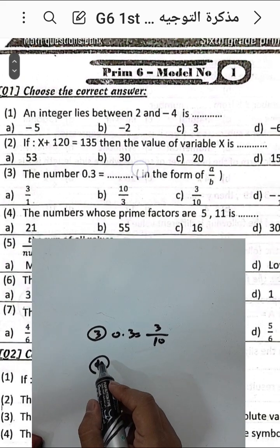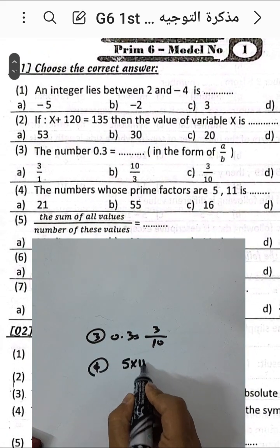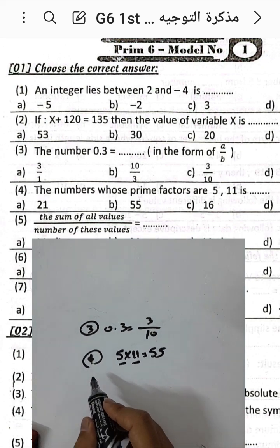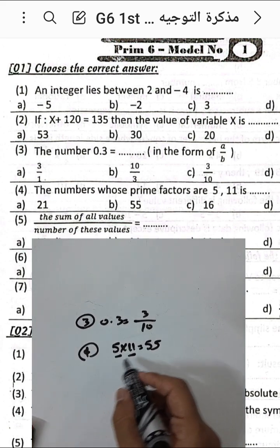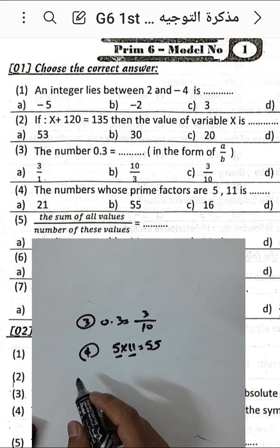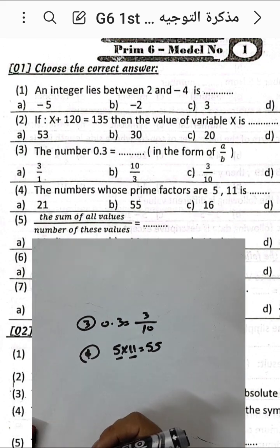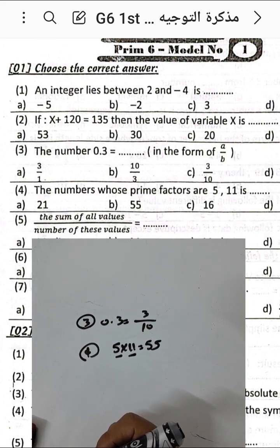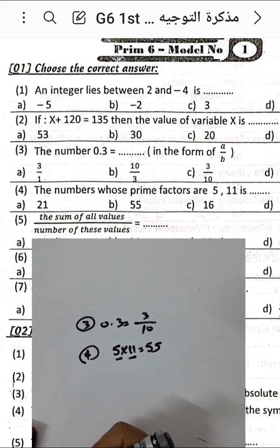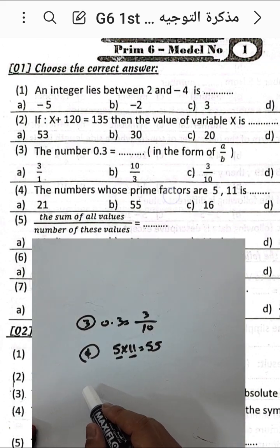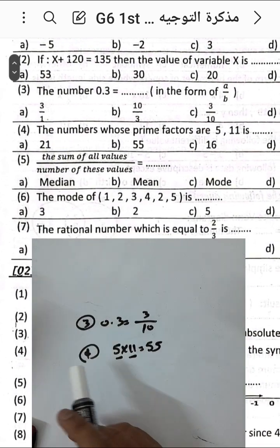Question number four: the number whose prime factors are 5 and 11. It will be 5 multiplied by 11, which equals 55. Because 5 and 11 are prime numbers, the least product between them is 5 times 11 equals 55. The number 55 can be divided by 5 and 11, so the number whose prime factors are 5 and 11 is 55.